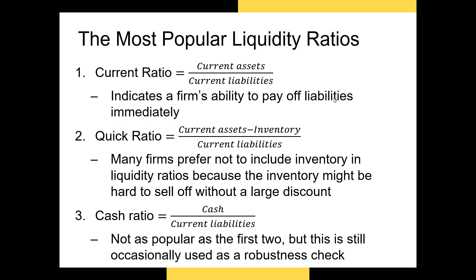Let's start with the popular liquidity ratios. We have three of them. The first is the current ratio — current assets divided by current liabilities — which tells us the firm's ability to pay off its short-term liabilities immediately. Typically, a current ratio above one is a good thing, because if the firm needs to immediately pay off all of its current liabilities, it can.